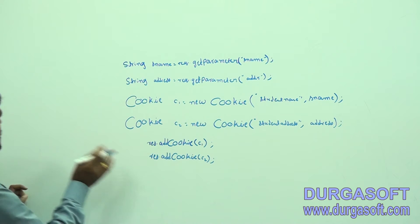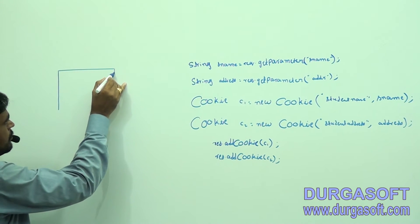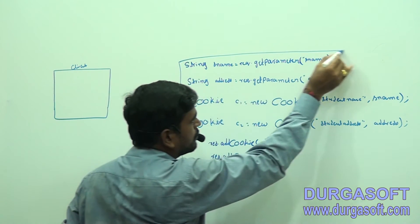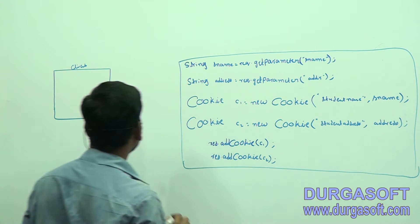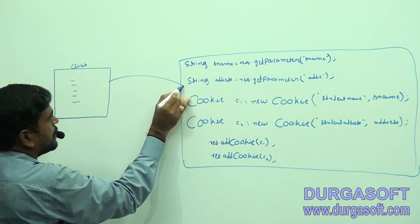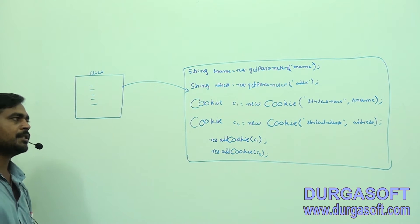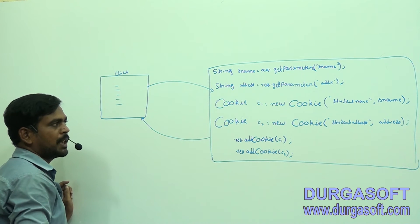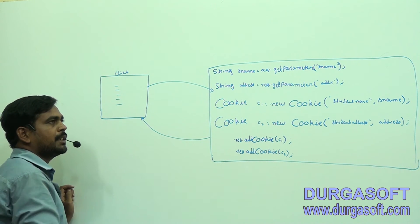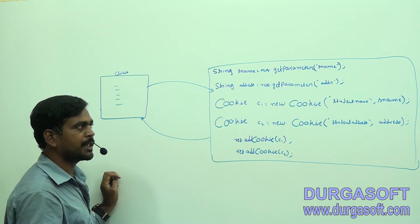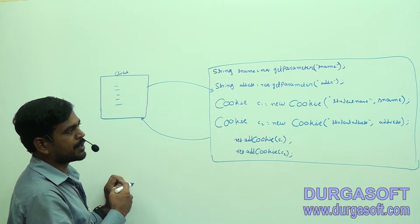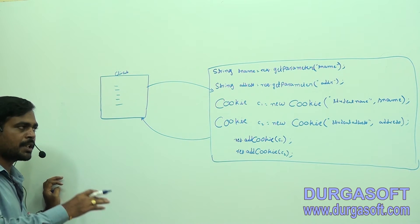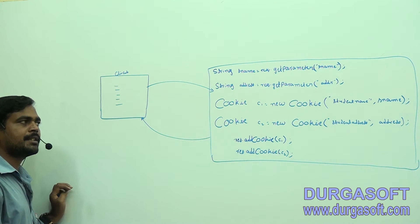Whenever we add cookies like this, the request is coming from client side to server side. The server side code receives the input values and stores them into those cookies. Once the cookies objects come back to the client side, the server side doesn't retain any object. All the cookie objects travel from server side to browser side, and whenever we make the next request, all these cookie objects go from client side back to server side.